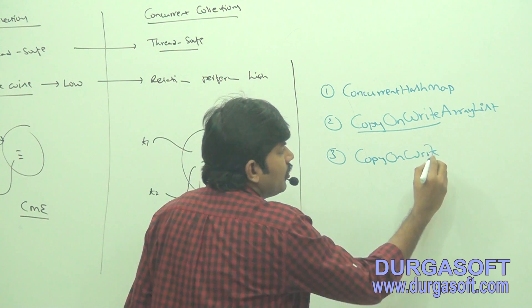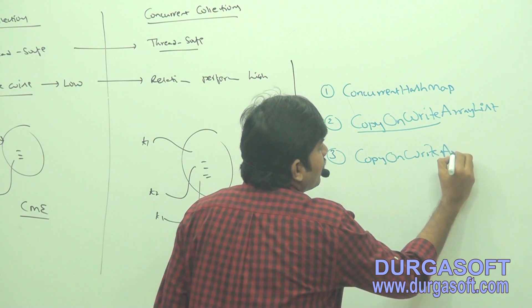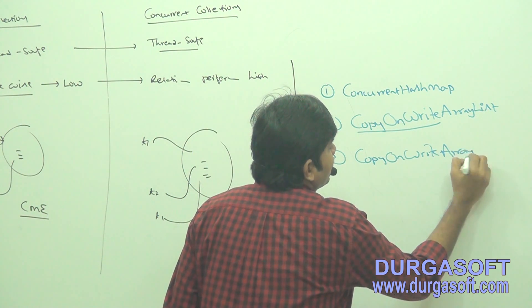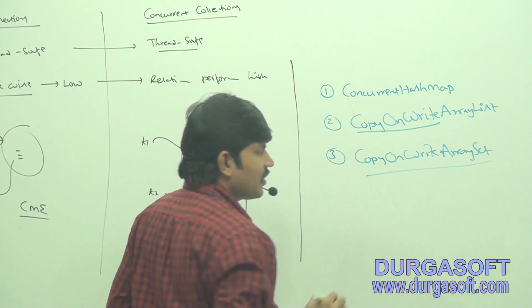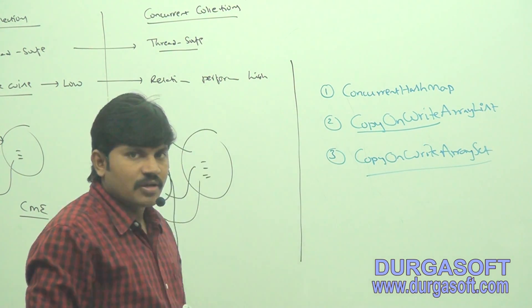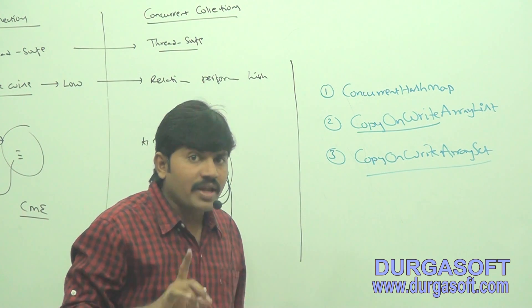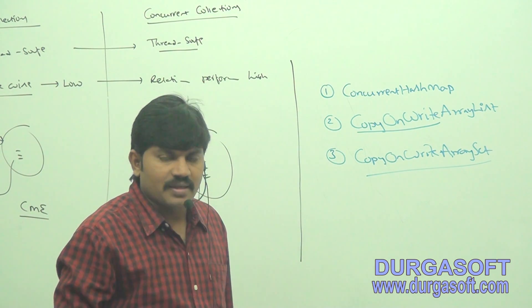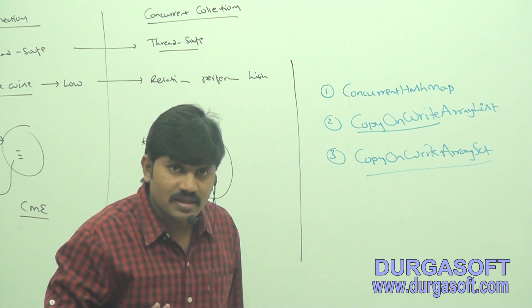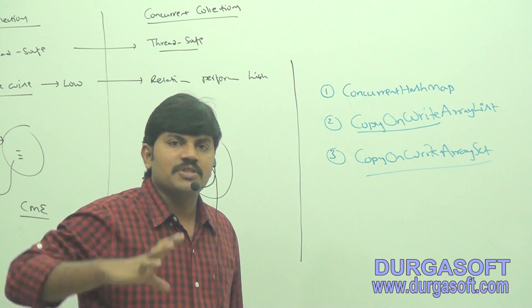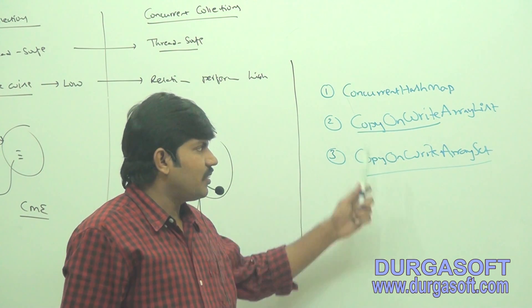The third concurrent collection is CopyOnWriteArraySet. These three concurrent collections — ConcurrentHashMap, CopyOnWriteArrayList, and CopyOnWriteArraySet — are what we are going to discuss at the first level in detail.